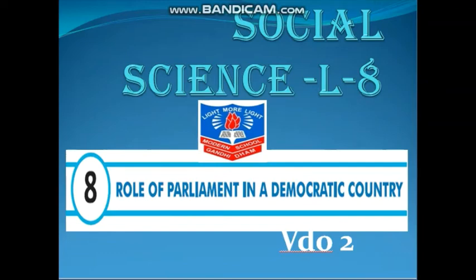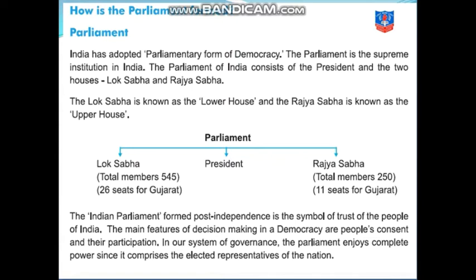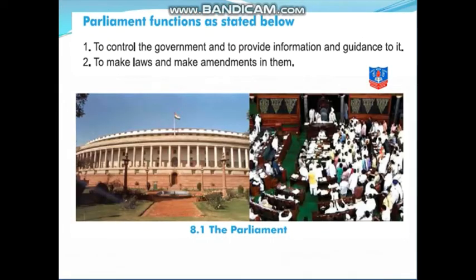Good morning everyone. Today we are going to continue with our lesson number 8 of social science, 'Role of Parliament in a Democratic Country.' This is the second video. In the last video we studied how India has adopted its government, then there is parliament who is the supreme head of the nation for administration, and president is the head of the parliament which has got two houses — Lok Sabha, the lower house, and Rajya Sabha, the upper house.